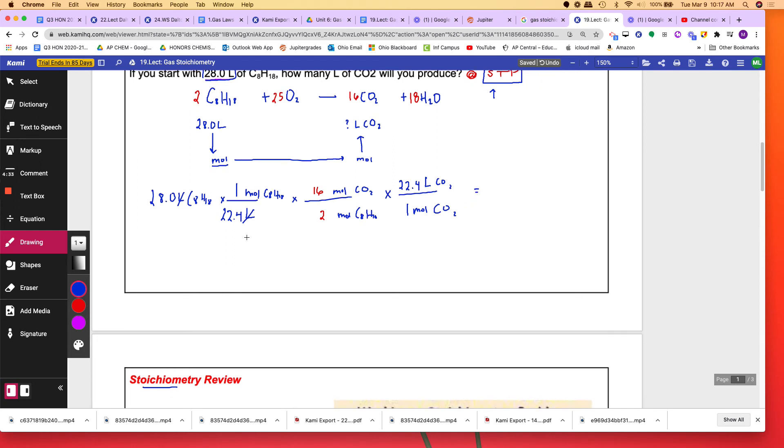And you have done a very short problem, right? So that's a shortcut. So you go 28.0 divided by 22.4 times 16 divided by 2 times 22.4 equals 224.